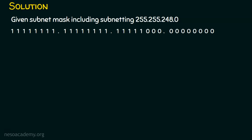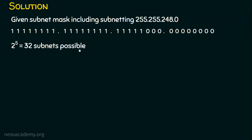Now, since this is a class B network, the first two octets remain unchanged from the original subnet mask. So we focus on the next two octets — that's where the change occurs. There are five ones in the new subnet mask portion, which means 2^5 = 32 subnets are possible.